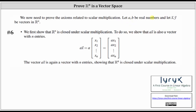Now we prove the five axioms related to scalar multiplication. We let a and b be real numbers and vector x and vector y be vectors in Rn. First, we show that Rn is closed under scalar multiplication by showing that a times vector x is also a vector with n entries. Multiplying a by each component of vector x, the result is a vector with n entries, showing Rn is closed under scalar multiplication. Step six is complete.